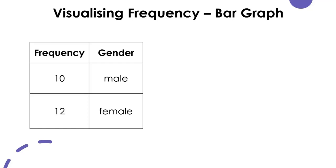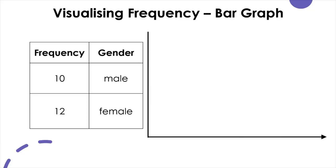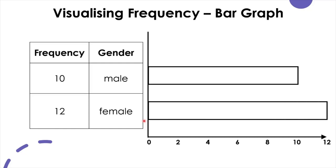To draw a bar graph, you need to draw the axes first. The categories of the nominal variable go on one axis — in this case the vertical axis — so we have male and female as categories on the vertical axis. Then the frequency information for each category goes on the other axis to show comparisons among discrete categories. The height of each bar should correspond to the frequency: 10 for male and 12 for female. A bar graph can be useful to point out the order and relative importance between different categories when there are many categories under a variable.